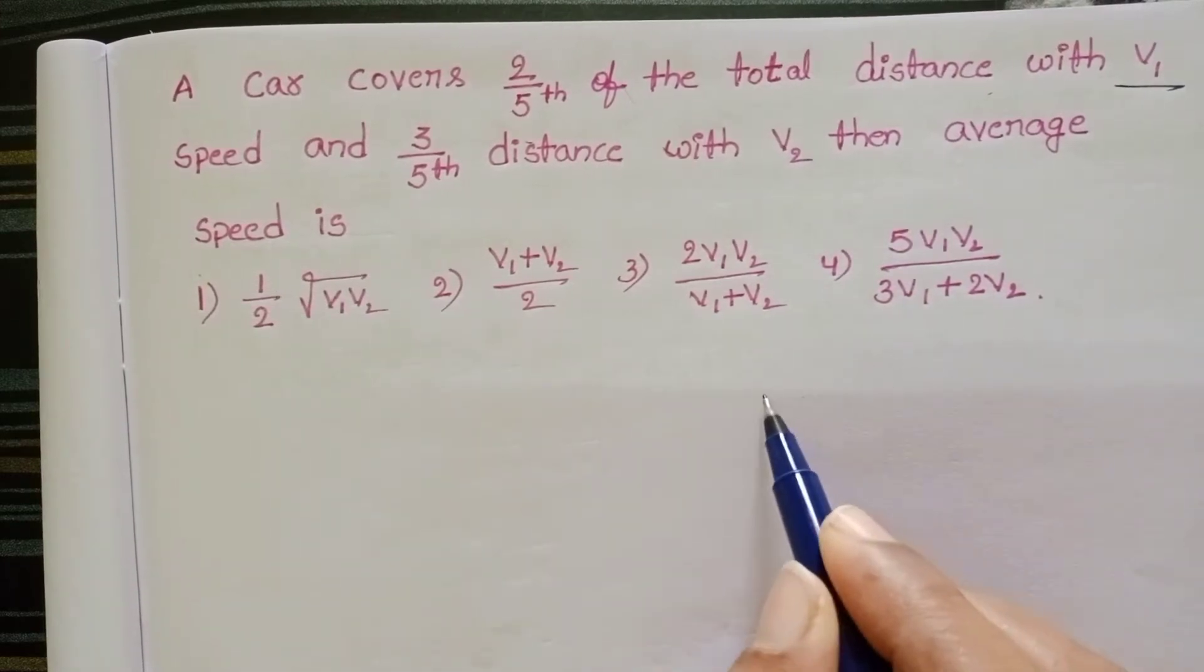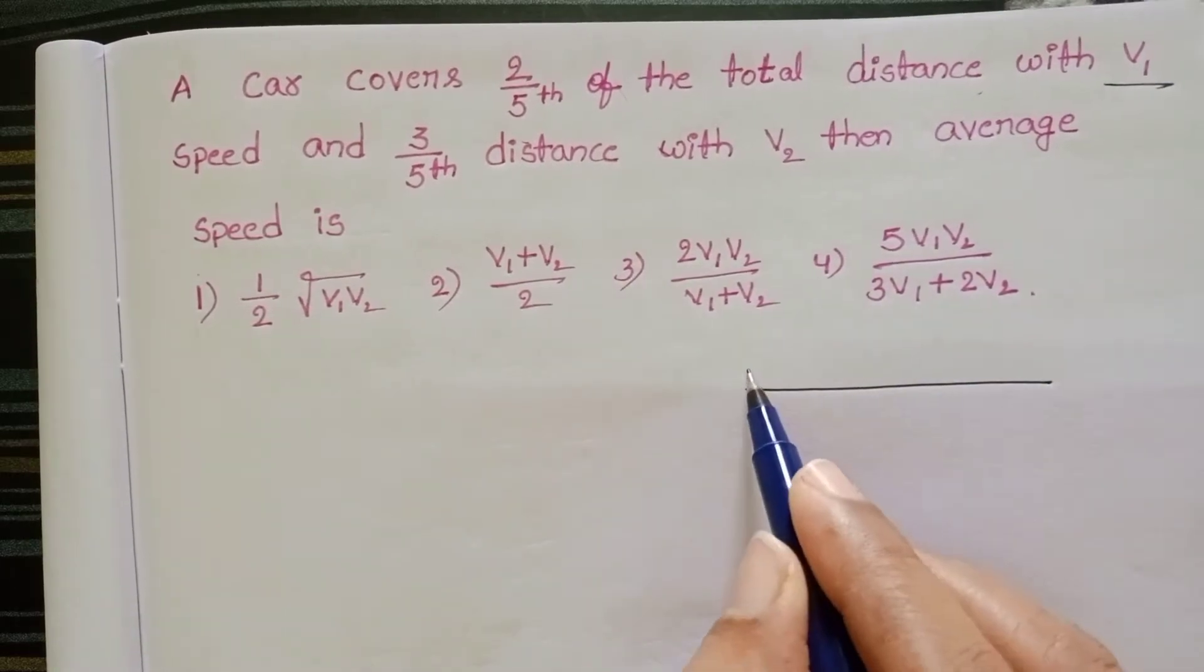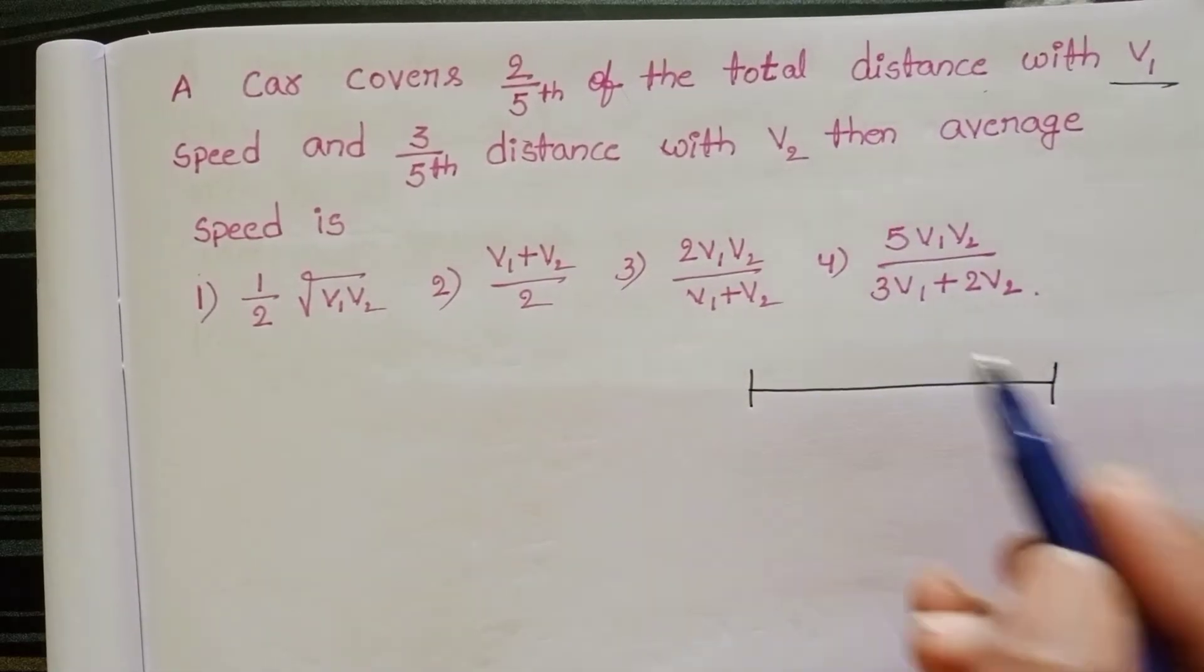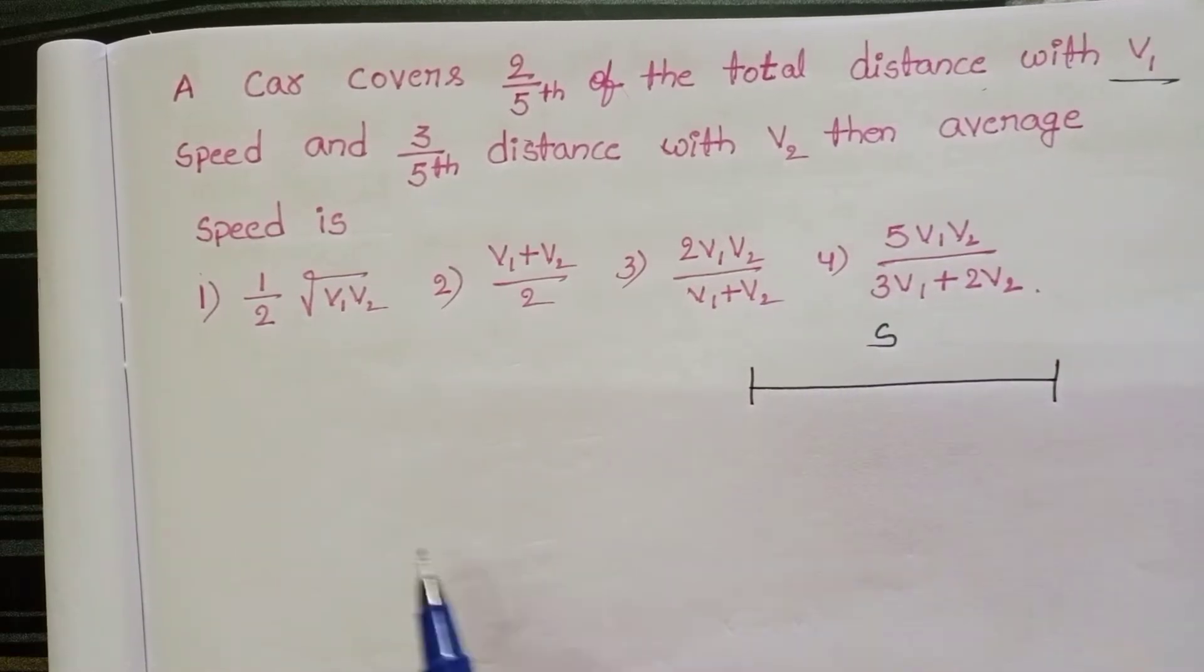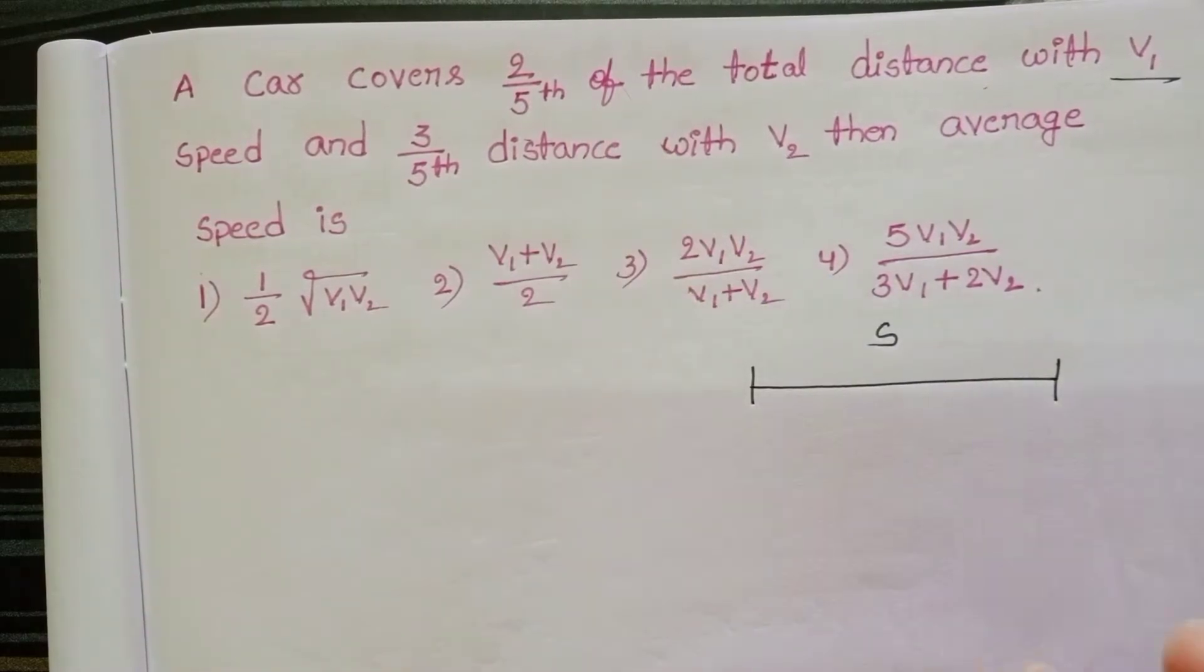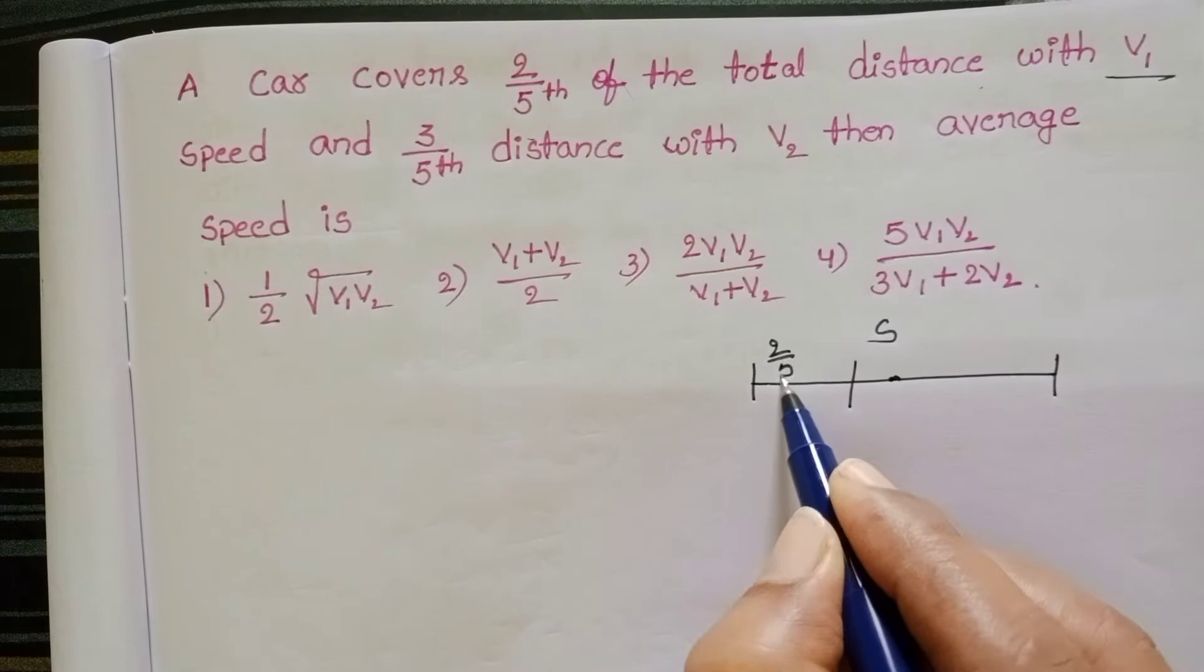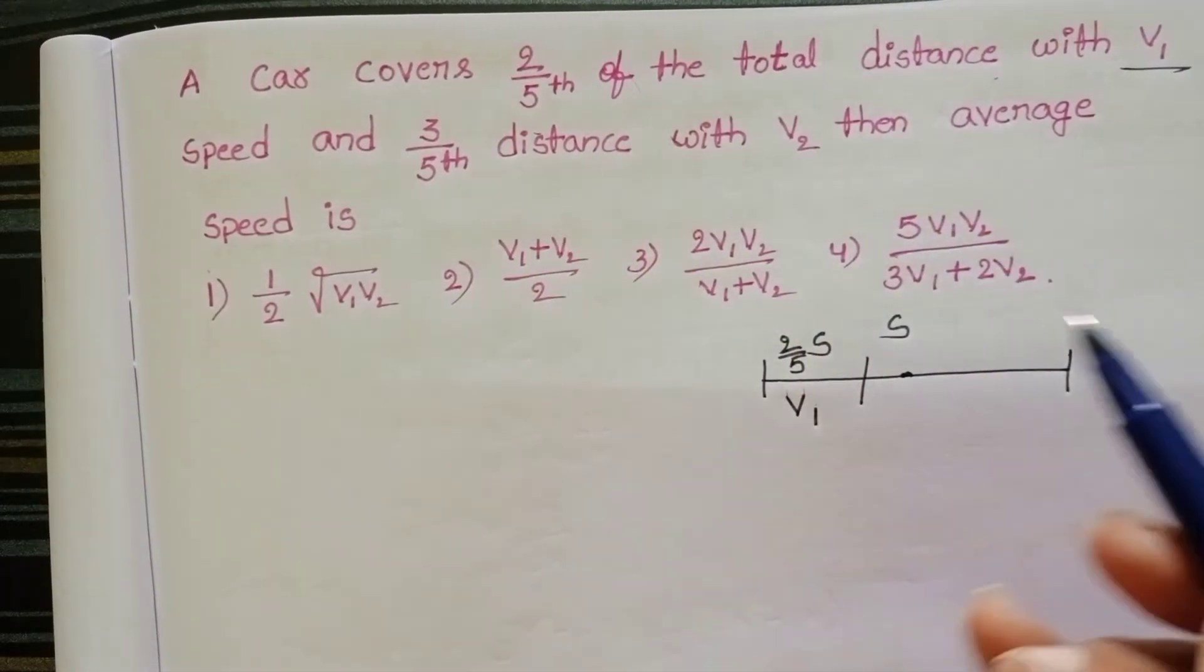A car is moving along this path. Let the total distance travelled by the car be S. So in this total distance, two-fifth of the total distance is travelled with the speed V1 and three-fifth distance with the speed V2.